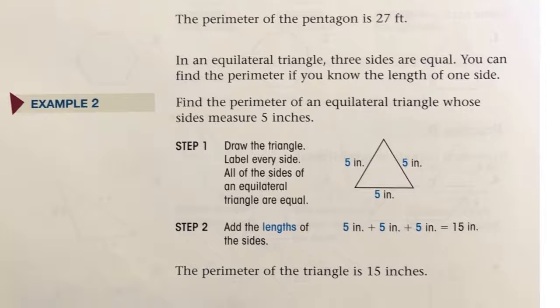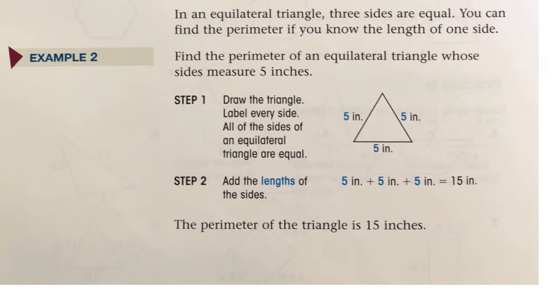The perimeter of the pentagon is 27 feet. An equilateral triangle has 3 sides that are equal. You can find the perimeter if you know the length of one side, because all the sides are the same. So find the perimeter of an equilateral triangle whose side measures 5 inches. If we know one side is 5 inches, then we can write in that all sides have 5 inches, because an equilateral triangle has all sides being the same length.